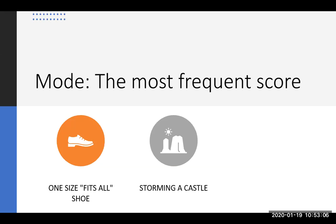He had all his soldiers line up along the edge of the mountain they were hiding behind and look at the castle. Back then, castle bricks were a kind of standard size, so he had everybody count how many bricks tall the wall was. After everybody finished counting, he asked for their scores: 55, 55, 55, 54, 55, 56, 55, 95 — somebody had double vision — then 55, 55, 54. While there was some variability, most people counted 55 bricks, so he used the mode to decide the ladder length.